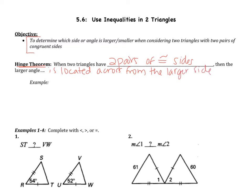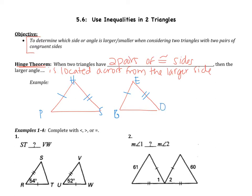This time we're comparing two triangles. The hinge theorem only applies when the triangles have two pairs of congruent sides — one pair and two pair. Now the angles in between the two sides are going to be different. If I have an angle of 59 degrees and an angle of 61 degrees, whichever angle is larger — 61 is larger — is located across from the larger side. So G-O is larger than P-S, meaning P-S is the smaller side.